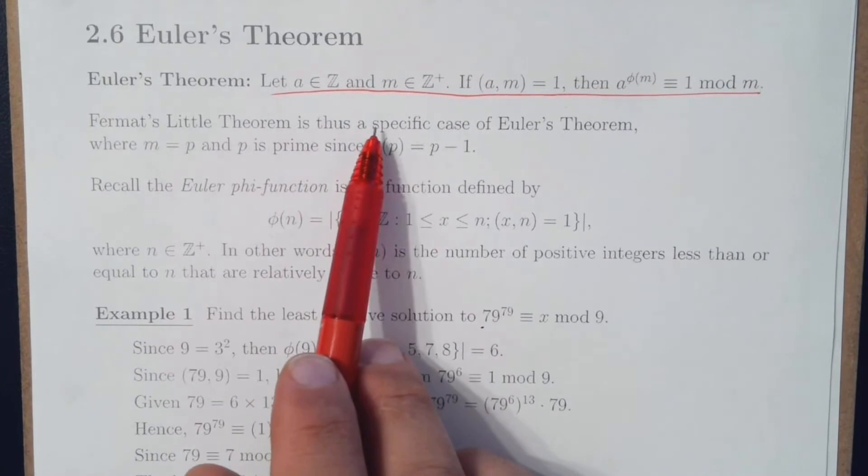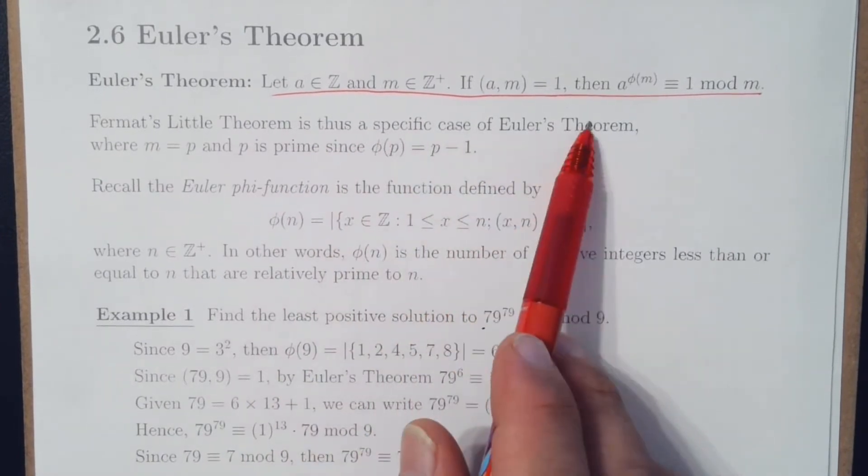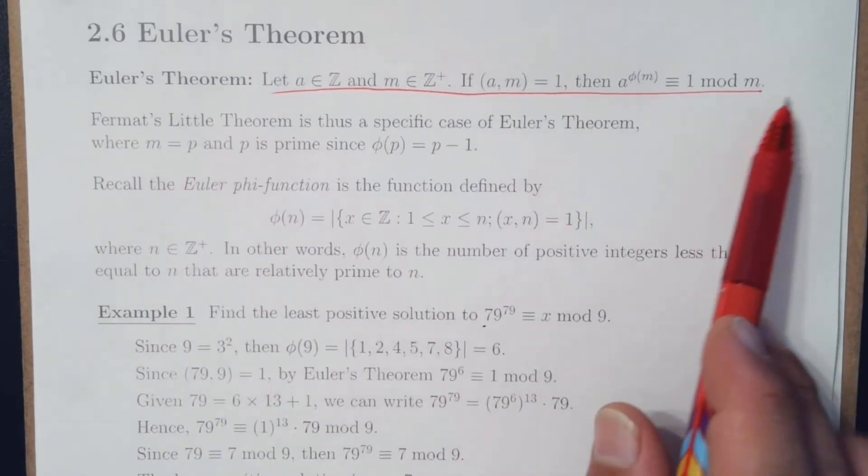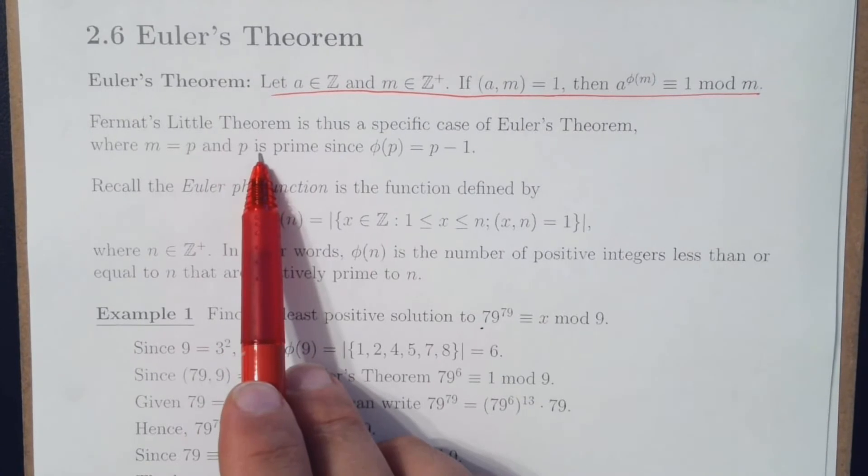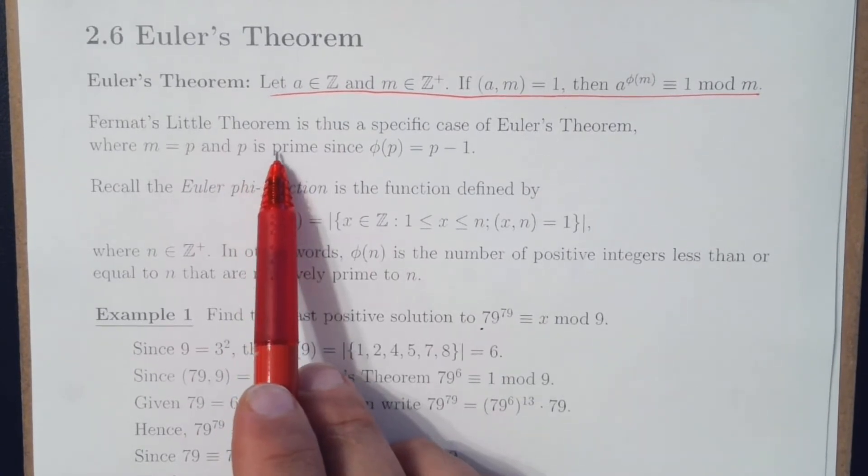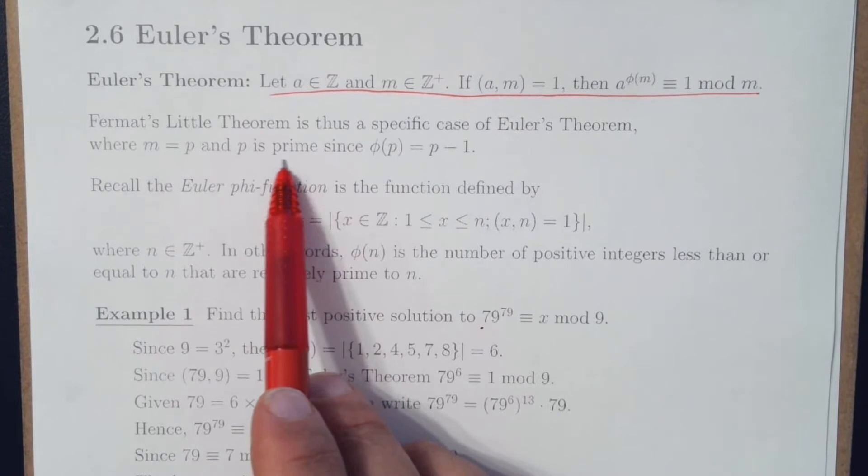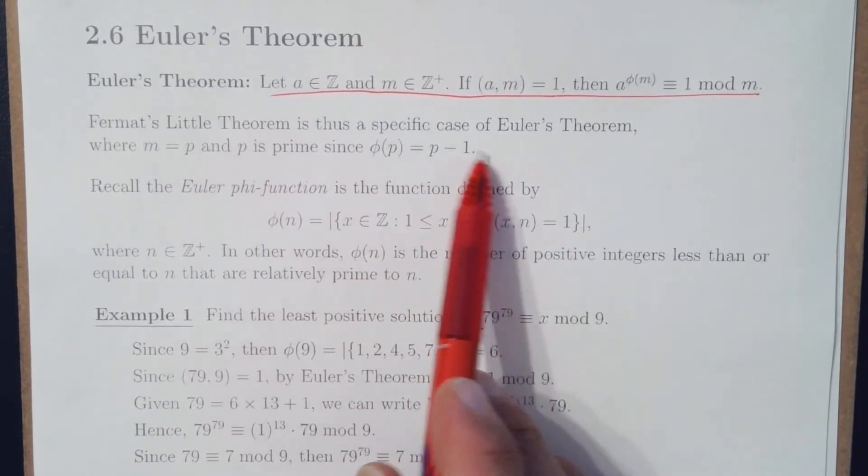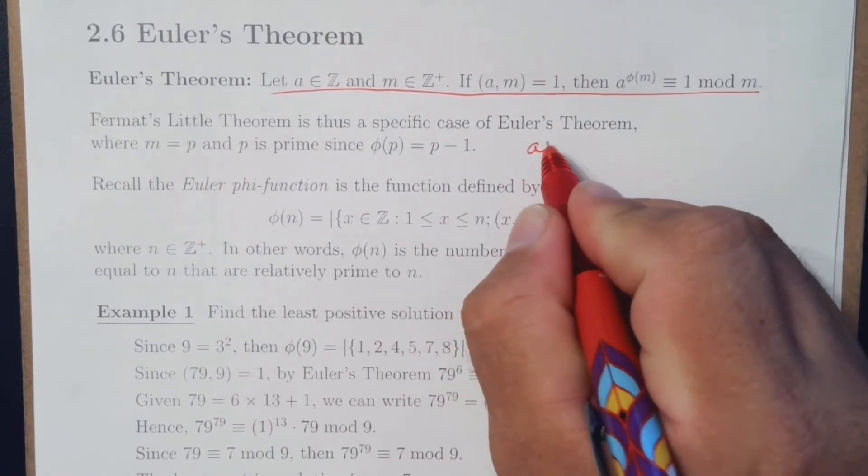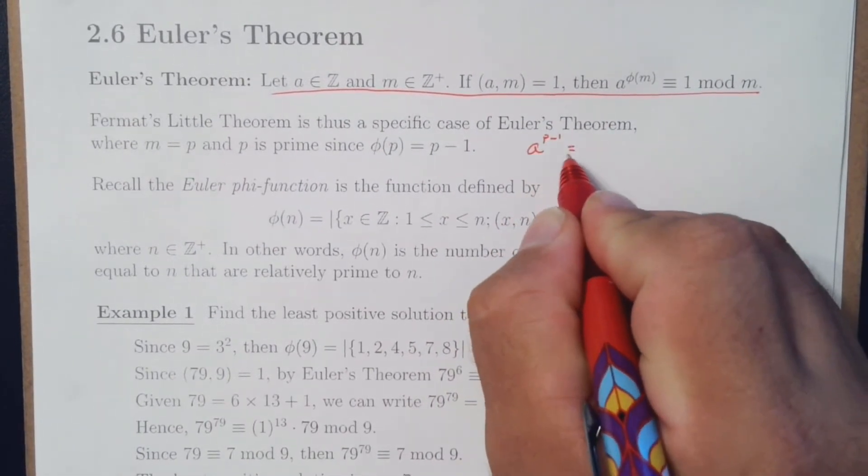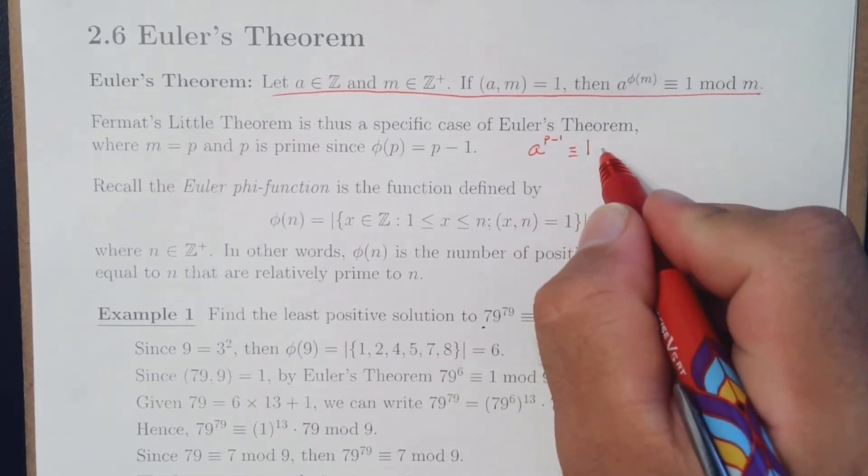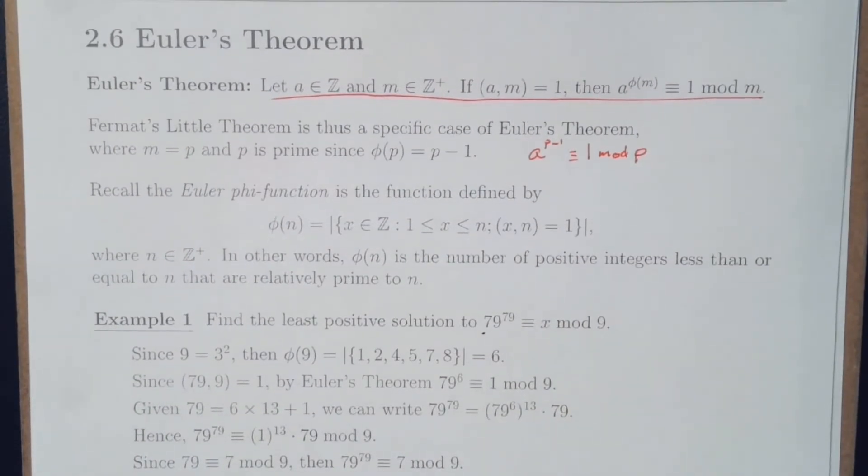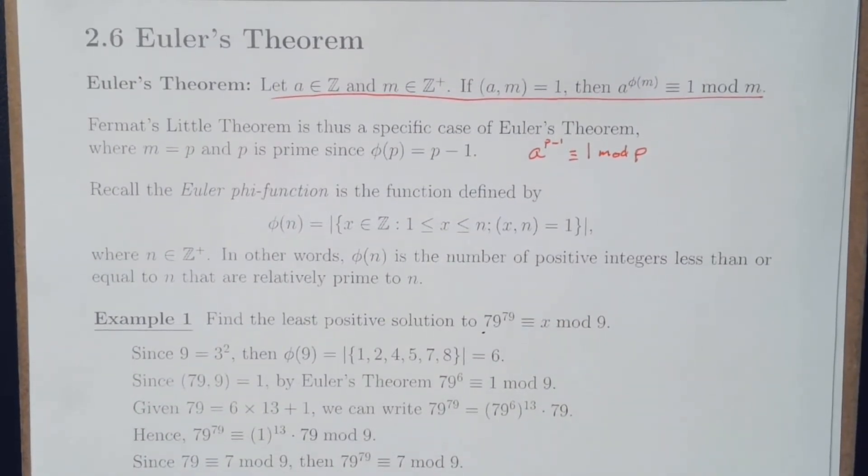And in fact, Fermat's Little Theorem is thus a specific case of Euler's Theorem, where m would be replaced with a p, where p is prime. And the phi of p would be p minus 1, so that a to the p minus 1 is going to be equivalent to 1 mod p by Fermat's Little Theorem.